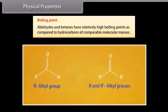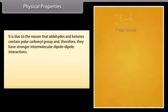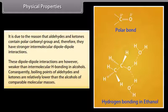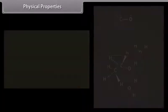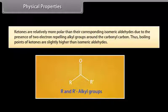Boiling points: aldehydes and ketones have relatively high boiling points compared to hydrocarbons of comparable molecular masses. This is because aldehydes and ketones contain a polar carbonyl group and therefore have stronger intermolecular dipole-dipole interactions. These dipole-dipole interactions are, however, weaker than intermolecular hydrogen bonding in alcohols; consequently, boiling points of aldehydes and ketones are lower than those of alcohols of comparable molecular masses. Ketones are relatively more polar than their corresponding isomeric aldehydes due to two electron-repelling alkyl groups around the carbonyl carbon, so their boiling points are slightly higher than isomeric aldehydes.